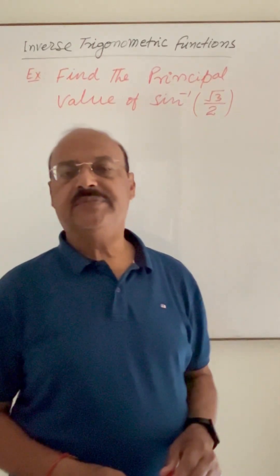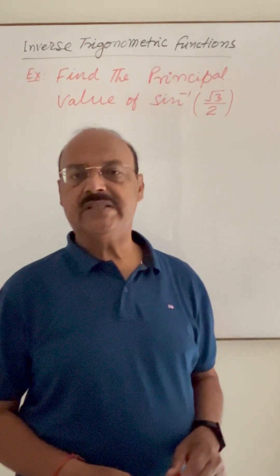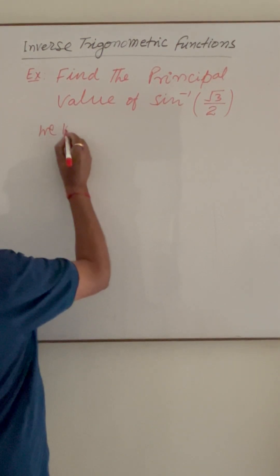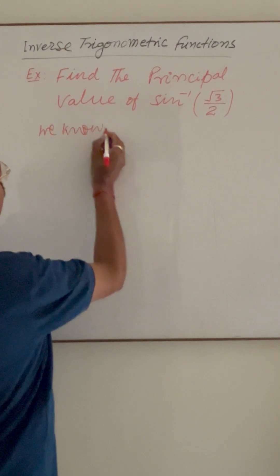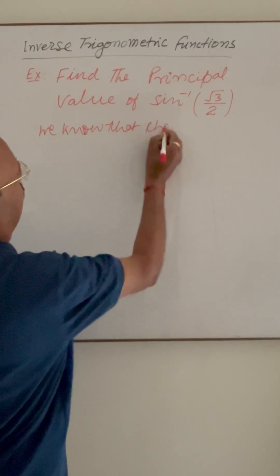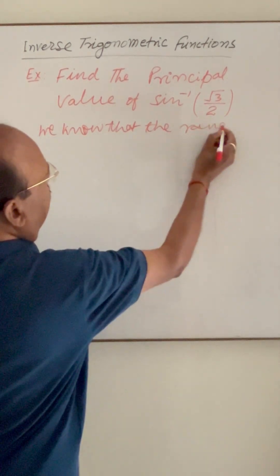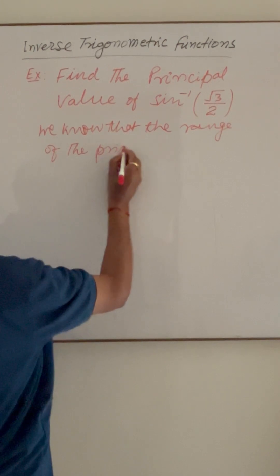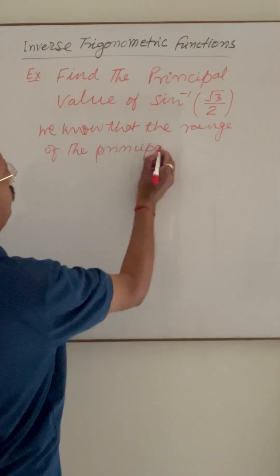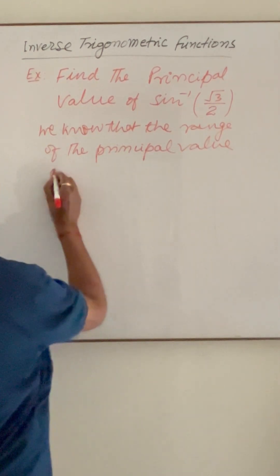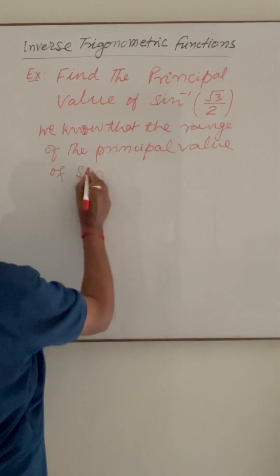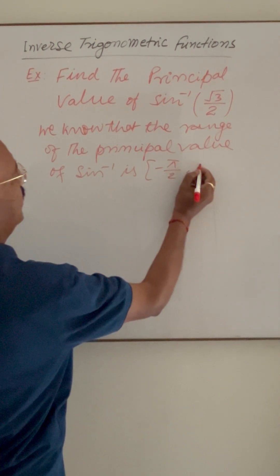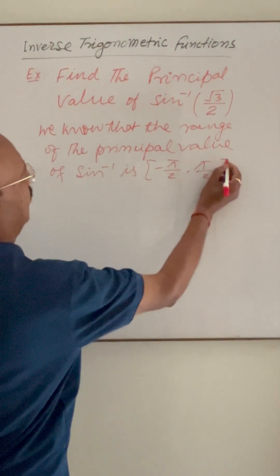Here we have to find the principal value of sine inverse of root 3 by 2. We know that the range of the principal value of sine inverse is the closed interval minus pi by 2 to pi by 2.